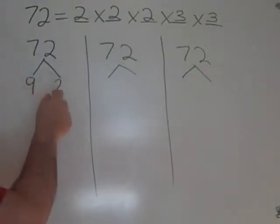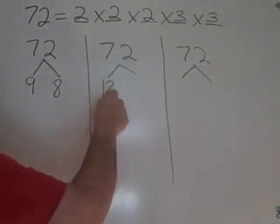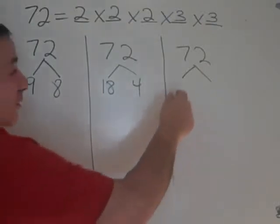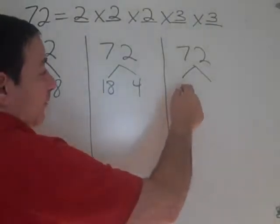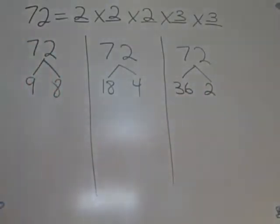Now, one student might say 9 times 8 is 72. Another student might say 18 times 4 is 72. Another student might say 36 times 2 is 72. They're all right.